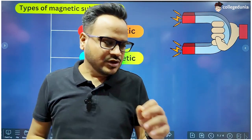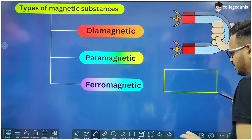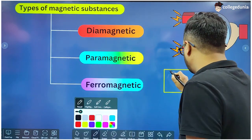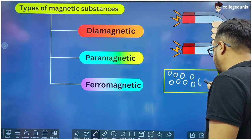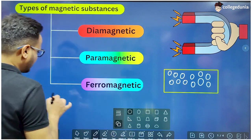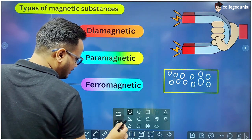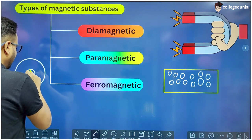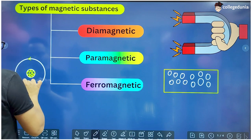We know that everything is made up of atoms. Every atom in itself is a magnetic dipole. In the center of an atom there is a nucleus containing protons and neutrons, and around this nucleus electrons are moving in circular orbits.